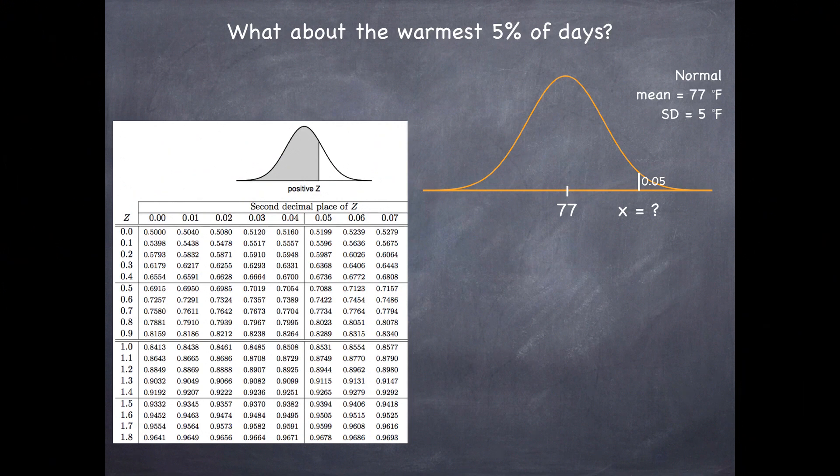So before we can go into the z-table to locate the percentile we need to first figure out that the lower tail is 0.95. That's just the complement of 0.05. And then we can look in the table to see if we can locate a percentile very close to that.